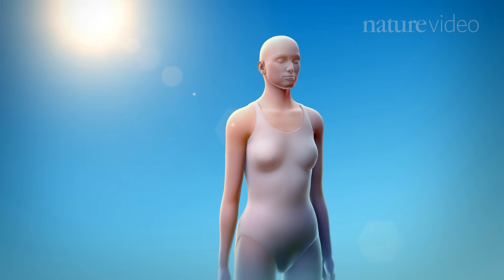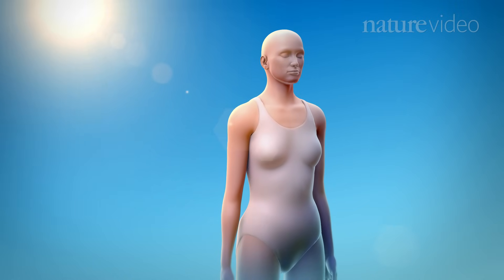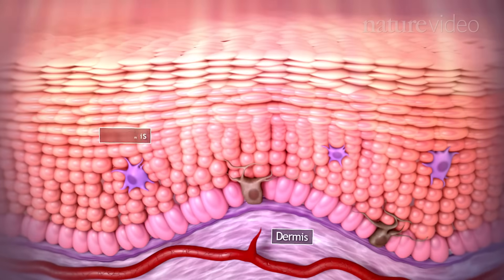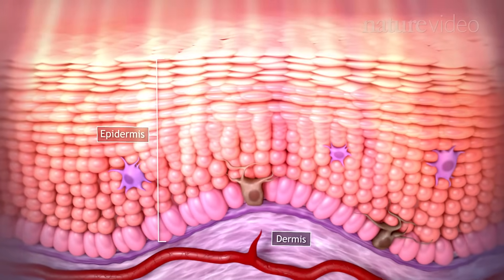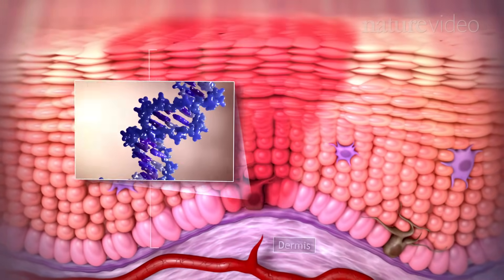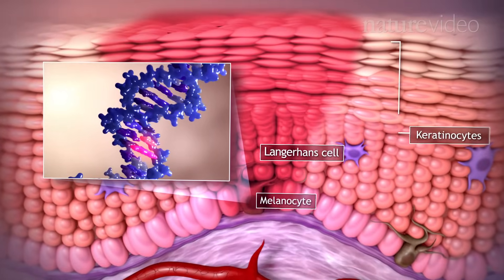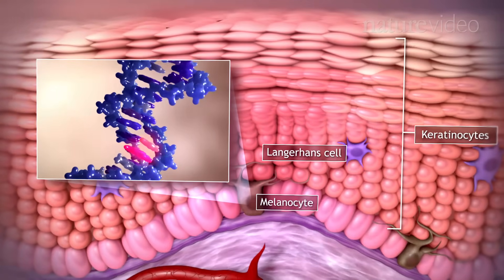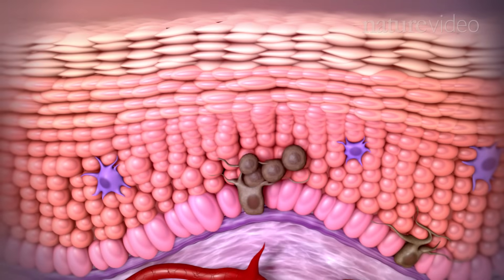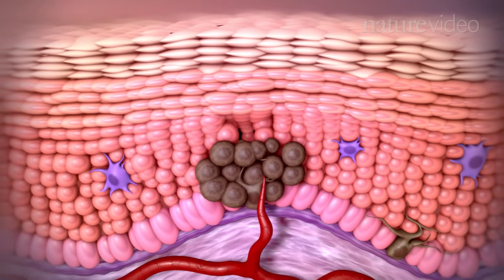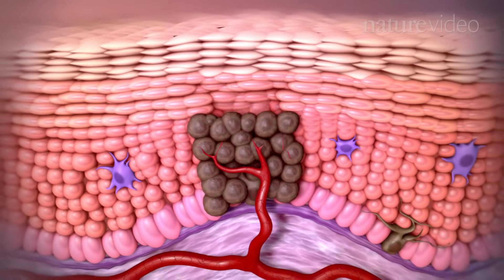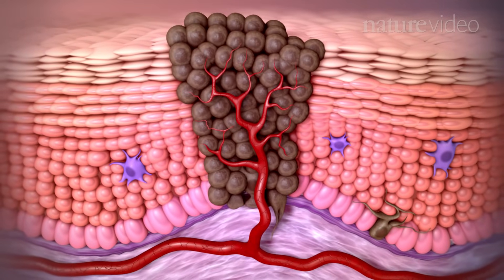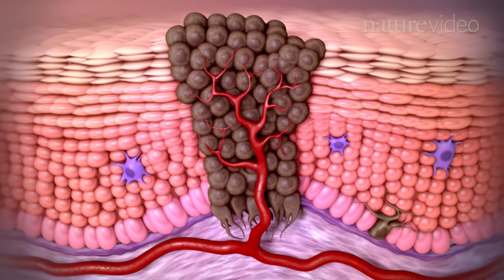Many genetic and environmental factors can cause tumours to form. For instance, UV radiation from the sun can damage DNA and other structures in melanocytes, which are the pigment-producing cells in the skin. Chronic damage to melanocytes by UV radiation leads to most cases of melanoma, which is a type of skin cancer.